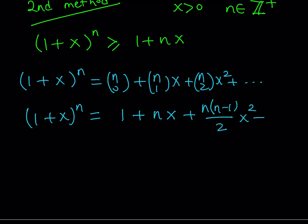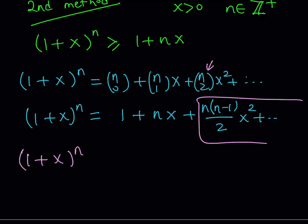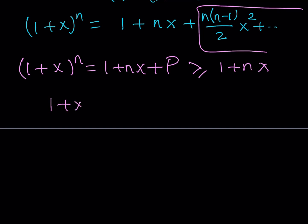One thing to note here is that we have an expression that is always going to be positive. This remaining part is made up of n choose 2 times x squared, n choose 3 times x cubed — we know that x is positive, and n choose r is also a positive quantity. Therefore, we can safely say that since 1 plus x to the nth power equals 1 plus nx plus something positive, this is going to be greater than or equal to 1 plus nx. So 1 plus x to the nth power is greater than or equal to 1 plus nx when x is positive and n is a positive integer, and the proof is complete.